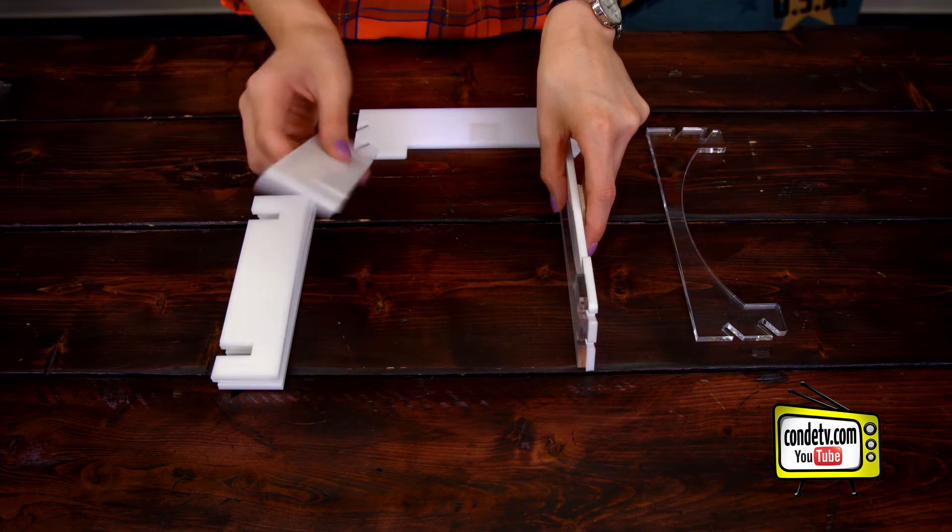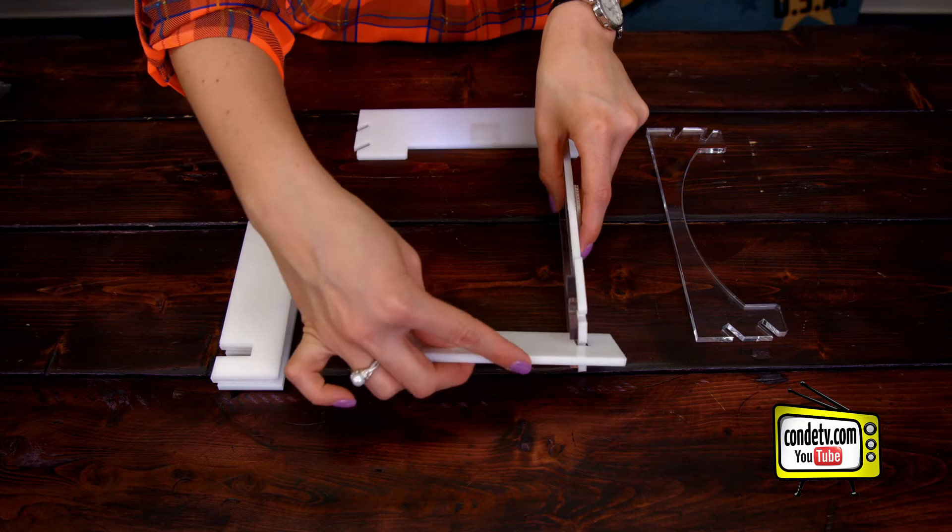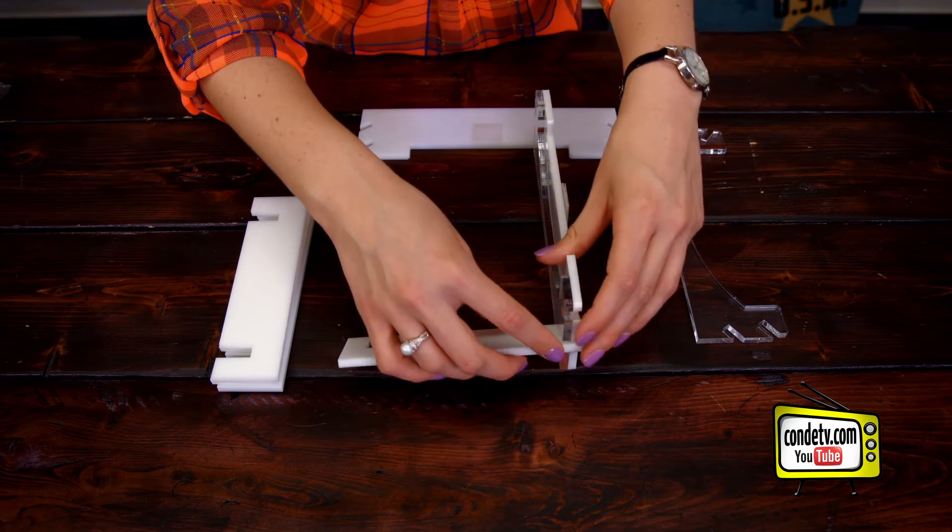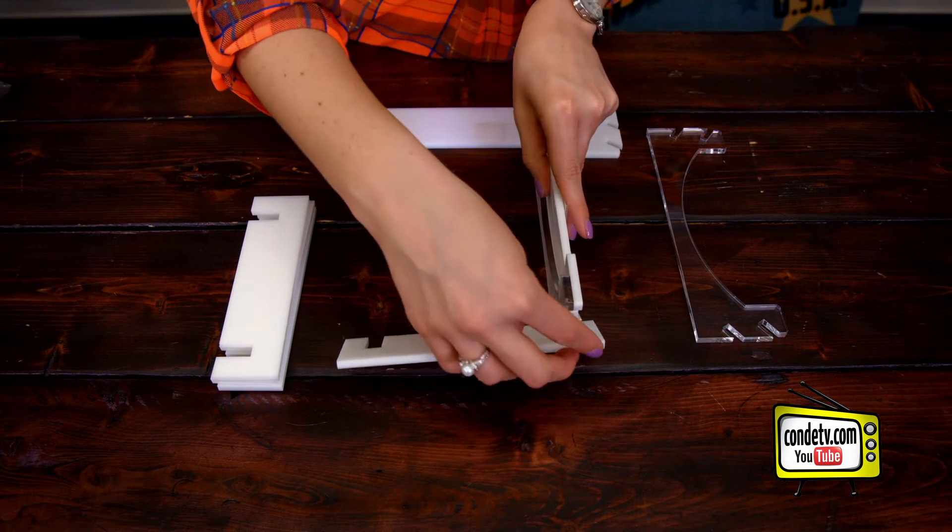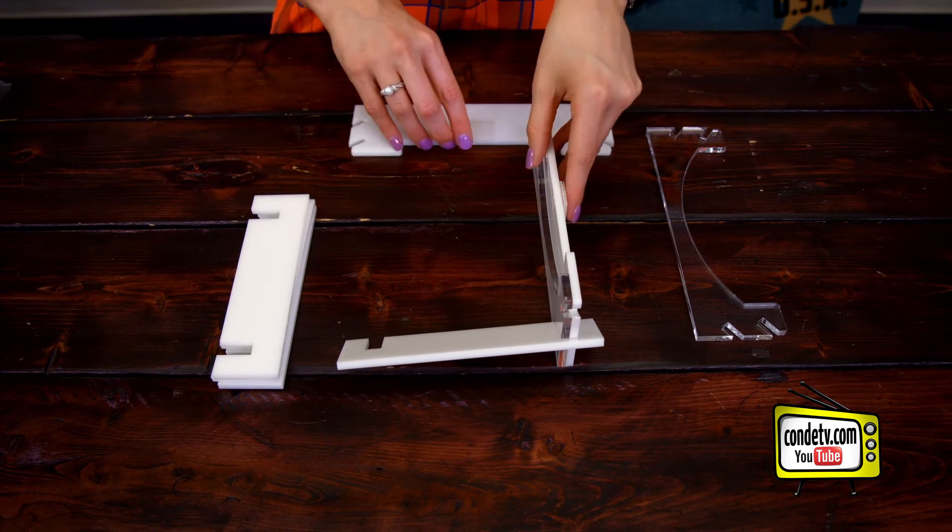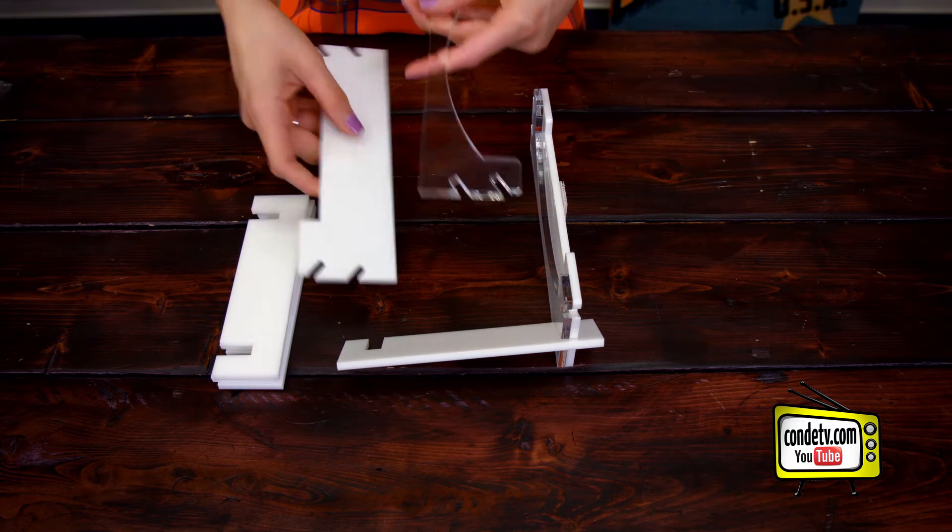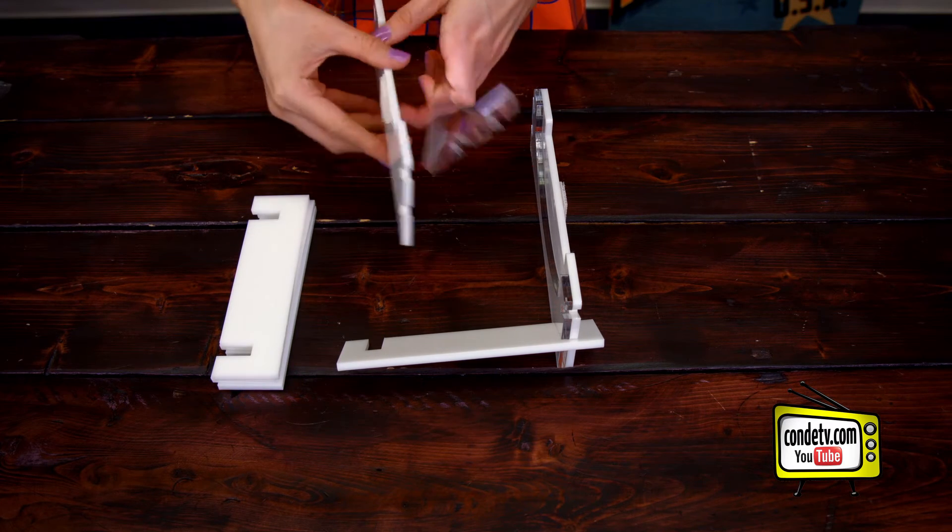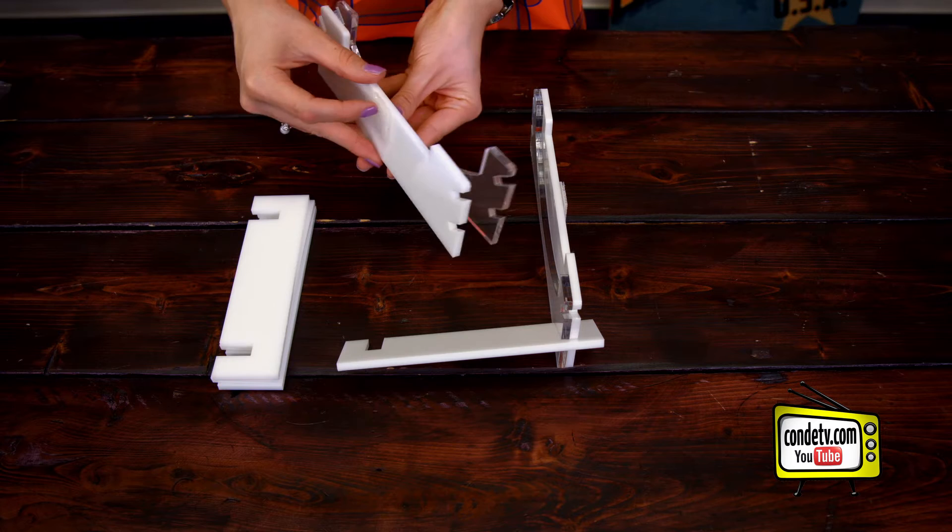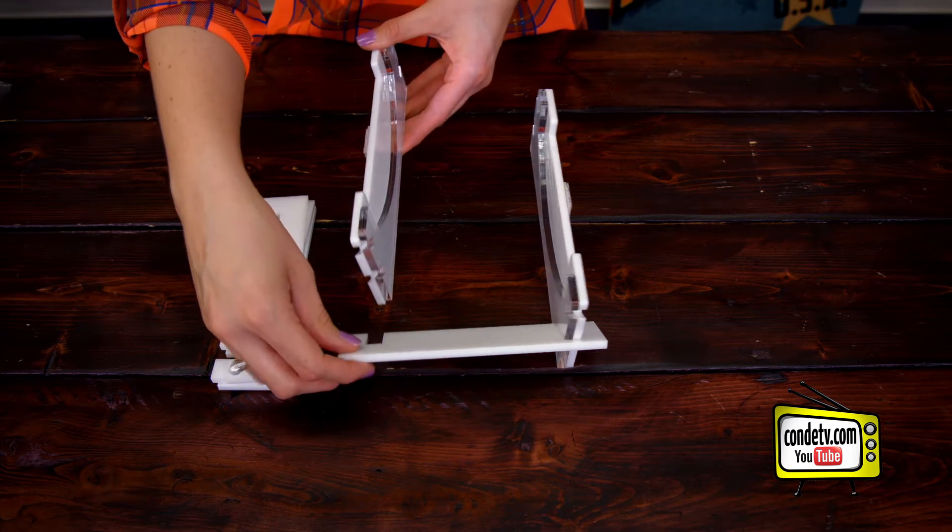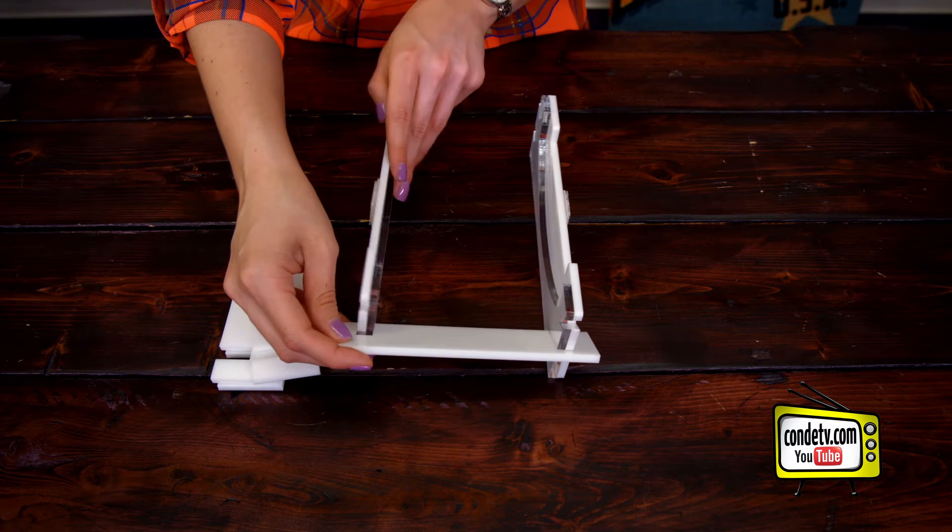And you're going to secure that with one of the four smaller white end pieces by simply sliding it into the little groove. Then you're going to take the other two pieces, the clear and the white, lining them up making sure that white tape is faced outward, and we're going to slide that same end piece into the other groove so that it holds and stands up straight.